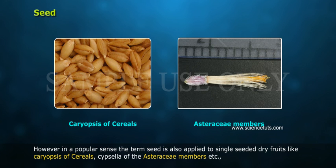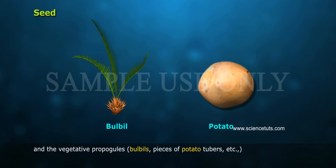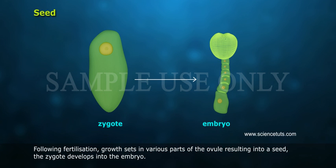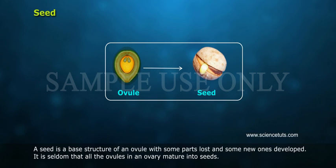In a popular sense, the term seed is also applied to single-seeded dry fruits like caryopses of cereals, cypsela of Asteraceae members, and vegetative propagules like bulbous pieces of potato tubers. Following fertilization, growth sets in various parts of the ovule, resulting in a seed. The zygote develops into the embryo. A seed is essentially a matured ovule with some parts lost and some new ones developed.